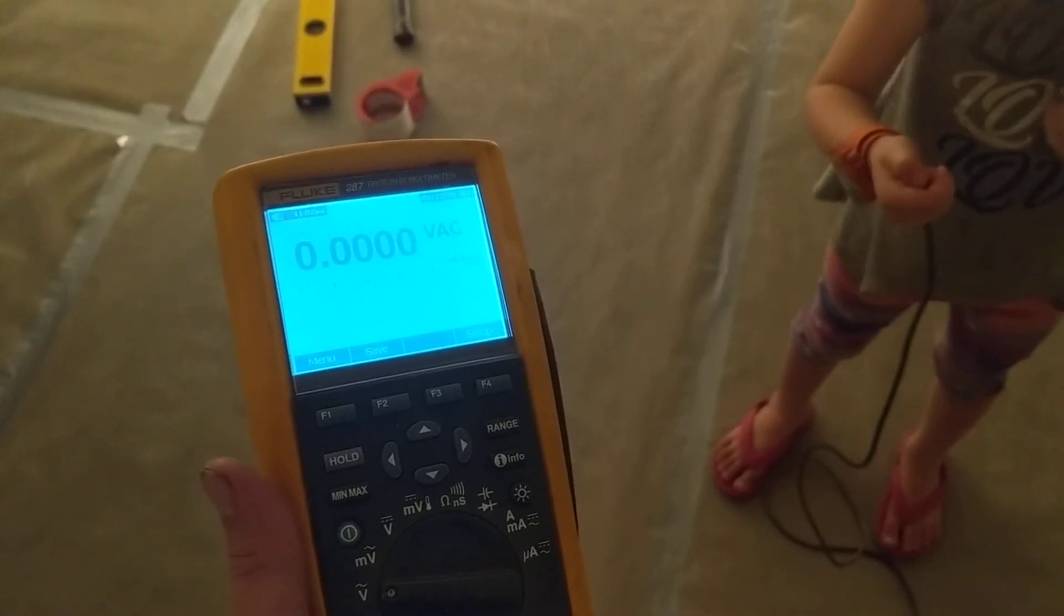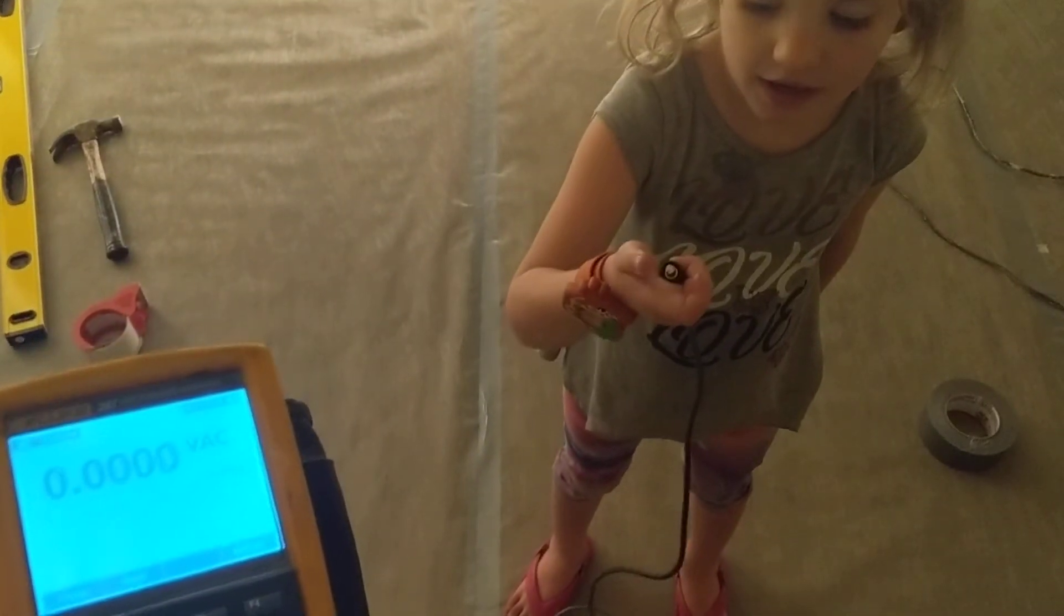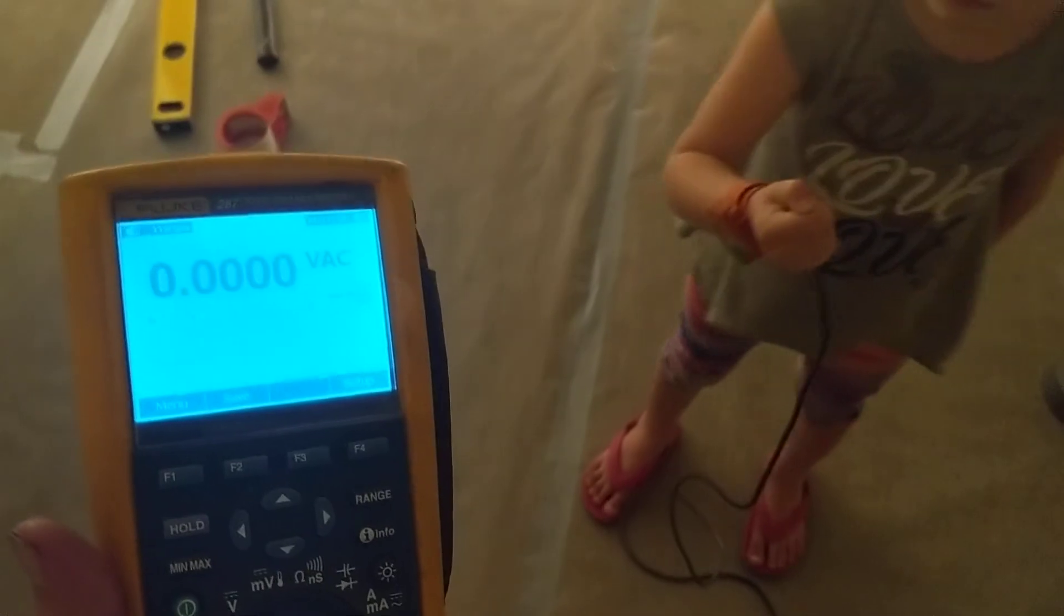Okay, Brian Hoyer here in our newly shielded room with my daughter Haven. She's going to be testing the body voltage, and right now we're at 0.0000.